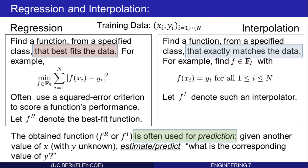In interpolation, the goal is to find a function from a specified class that exactly matches the data points. Find an f in some function class such that f(xi) equals yi for all the training points. Any such function is called an interpolator of the training set.